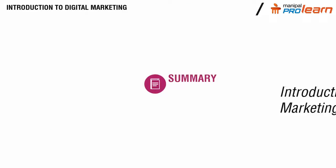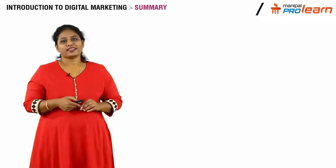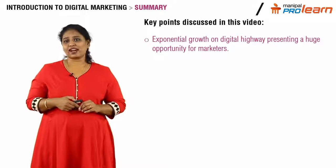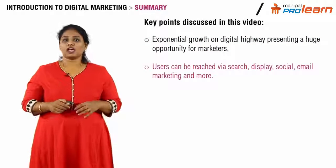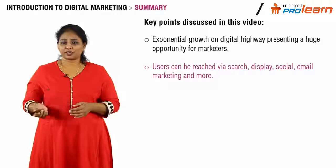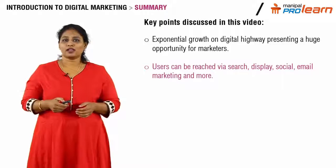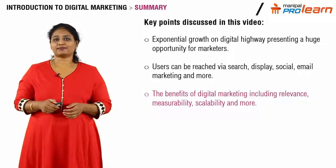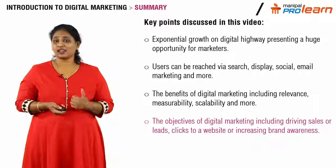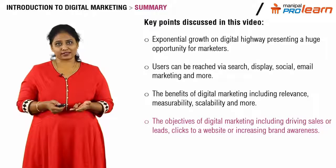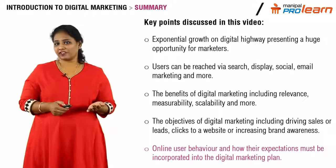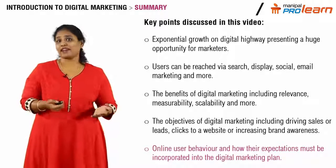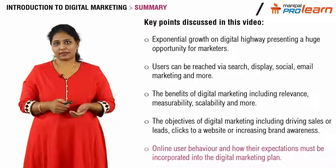That brings us to the end of this module. We learned that exponential growth in the digital world is a huge opportunity for marketers. Users can be reached through various channels — search, display, social media, email marketing, and more. Key benefits of digital marketing include relevance, measurability, and scalability. The main objectives are driving sales and leads, driving clicks to your site, or increasing brand awareness. Finally, we learned how user behavior in the digital world differs from the traditional world, and what factors are important when looking at a digital marketing campaign. Thank you.